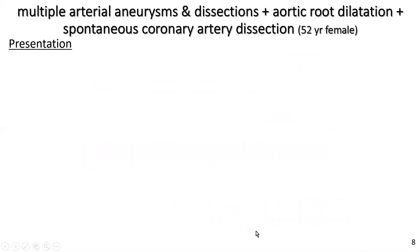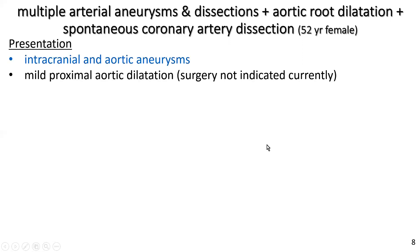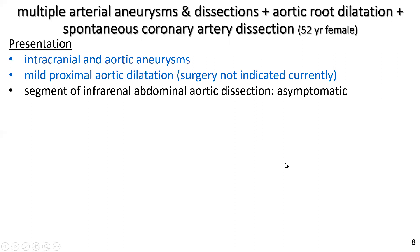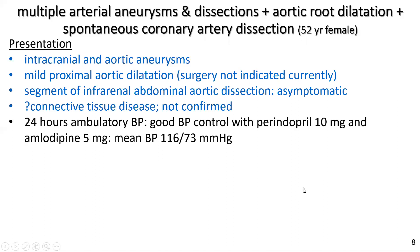Now to my case study: a 52-year-old female with multiple arterial aneurysms and dissections, including spontaneous coronary artery dissection, and aortic root dilatation. She had intracranial and aortic aneurysms, mild proximal aortic dilatation not requiring surgery at the time, a segment of infrarenal abdominal aortic dissection which was asymptomatic, and connective tissue disease not yet confirmed by diagnosis. Her 24-hour ambulatory blood pressure showed good control on perindipril and amlodipine.